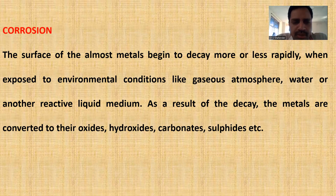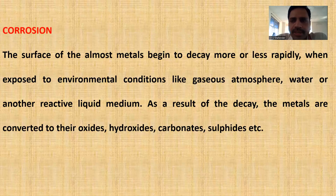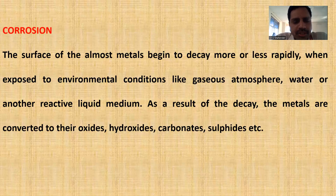Why does corrosion take place for metals? Because metals are initially extracted from their ores. Extracted from their ores means the metals are in a ground state — in the form of metal oxides, metal hydroxides, metal carbonates, and metal sulfides. When we bring these metals into a pure form, that is called extraction of the metals.